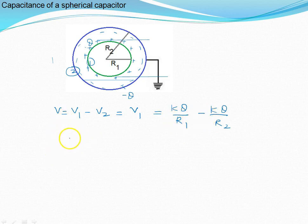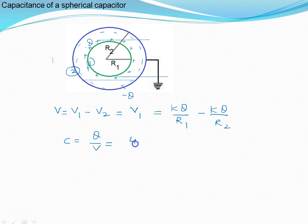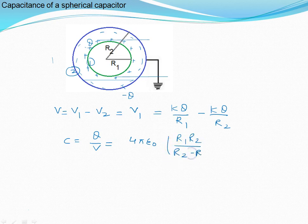For the capacitance, C = Q/V. When you substitute and simplify, you get the result C = 4πε₀R1R2 / (R2 minus R1). You can calculate this yourself.